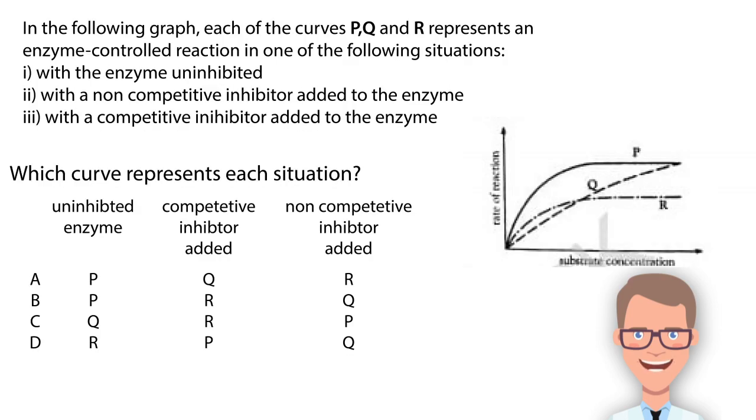Let's have a look at question number six. Do not forget to pause the video and find out the answer yourself. We have given three plots here PQ and R. Let's have a look at these. Plot P is a reaction which we normally see in an enzyme catalyzed reaction. The reaction is not altered by any external agents. So we know now P is an uninhibited enzyme reaction.